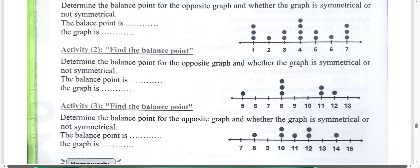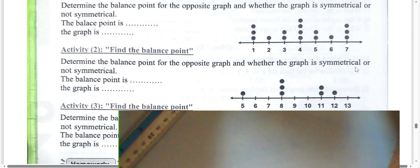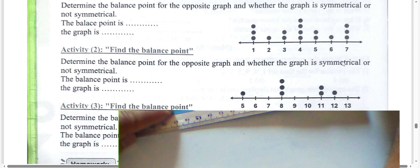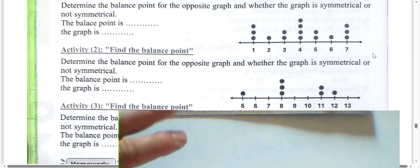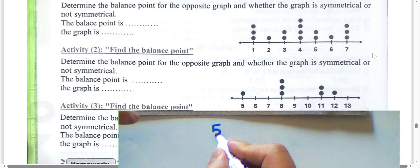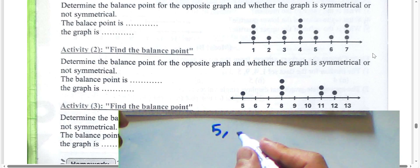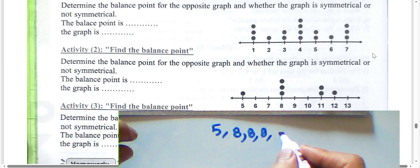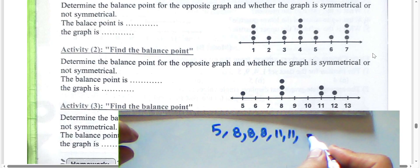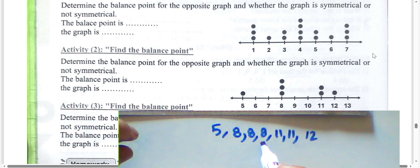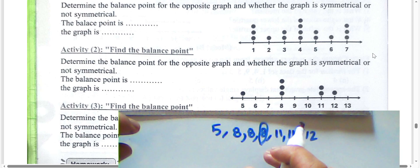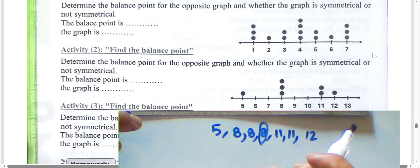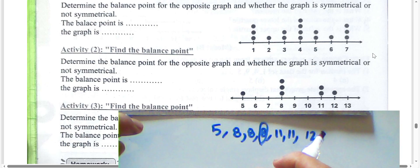For a non-symmetrical graph, we must find the balance point differently. Write the values: five repeating one time, eight repeating three times, eleven repeating two times, and twelve repeating one time. The number in the middle is eight, so eight is the balance point. This graph is not symmetrical.